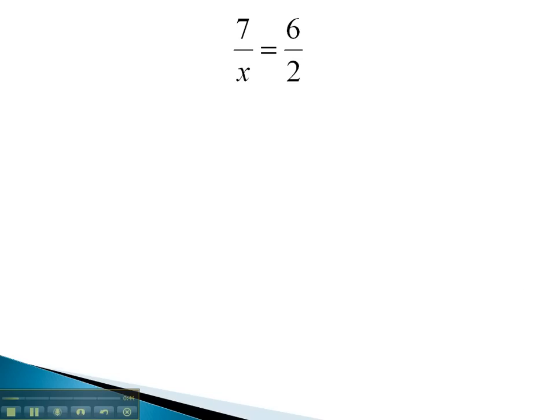Here, we have a proportion, 7 over x, equal to the ratio 6 halves. In order to solve this proportion, we're going to use the cross product and multiply the diagonals.